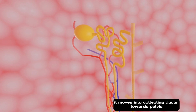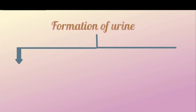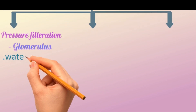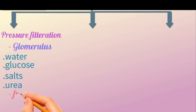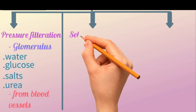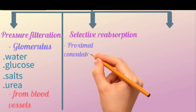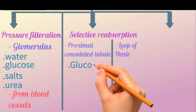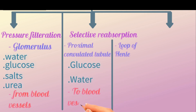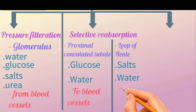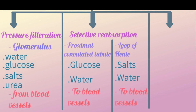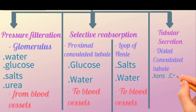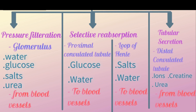Urine moves into collecting ducts towards the pelvis. Formation of urine has three main steps. The first step is pressure filtration, which occurs in the glomerulus, where water, glucose, salts, and urea are filtered out from blood vessels. The second step is selective reabsorption, which occurs in the proximal convoluted tubule and the loop of Henle — glucose and water are reabsorbed in the proximal convoluted tubule, while salts and water are reabsorbed in the loop of Henle. The third step is tubular secretion, which occurs in the distal convoluted tubule, where ions, creatinine, and urea are secreted from blood vessels into the renal tubule.